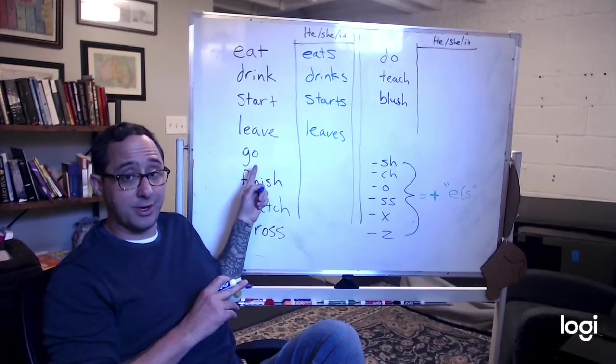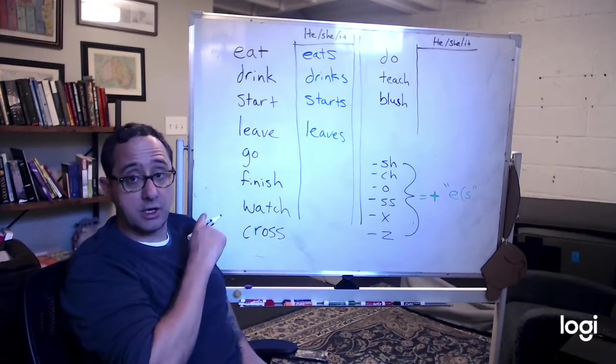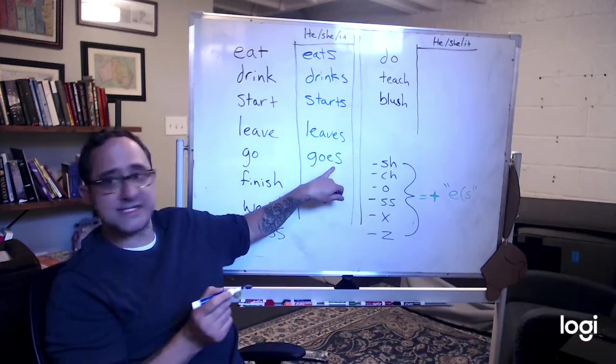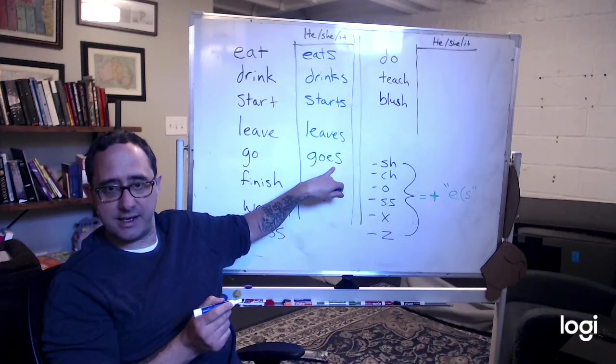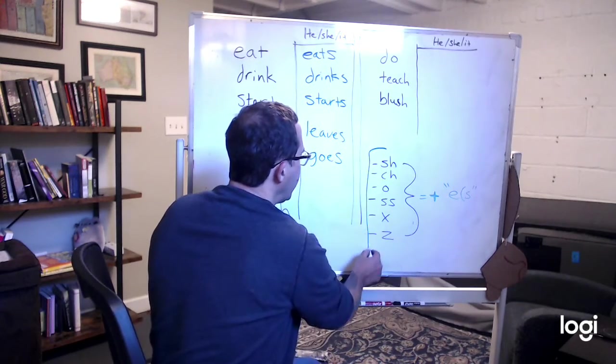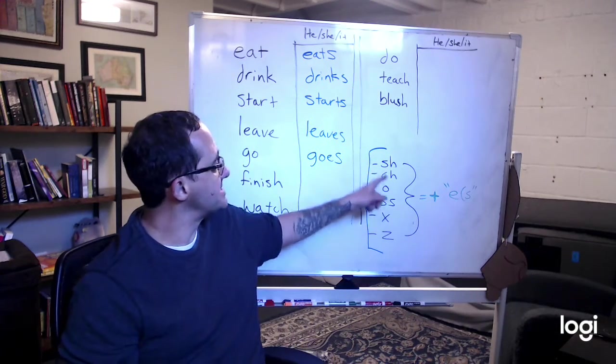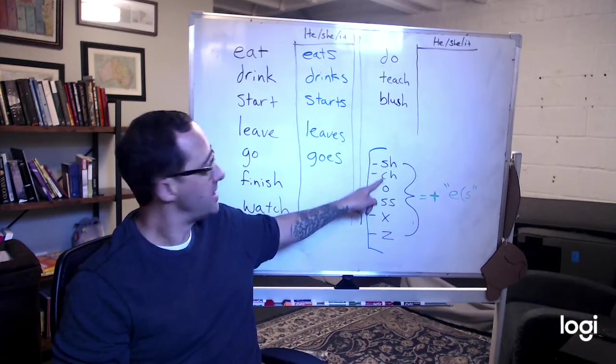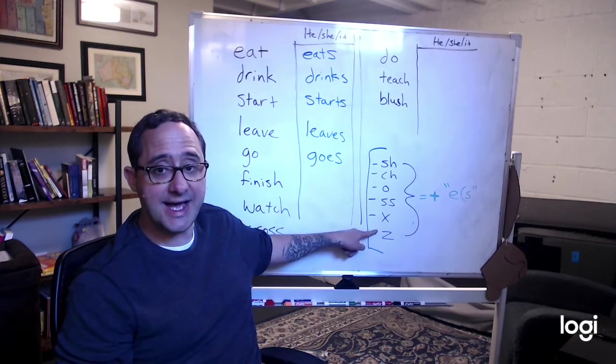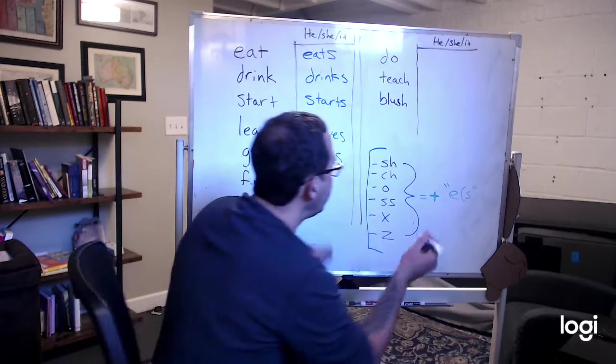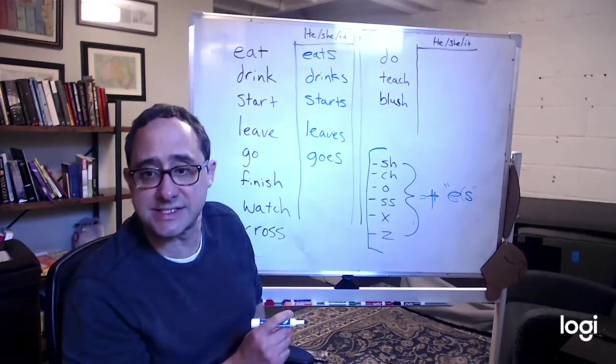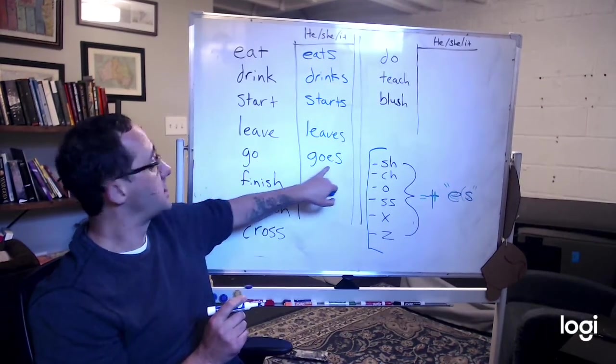How about go? He, I go. He goes. Notice I put an E S at the end. Here's the things that you put an E S at the end of. If the word ends in S H, the word ends in C H, O, S S, X, or Z, you add plus E S. E S. This ends in O, goes.